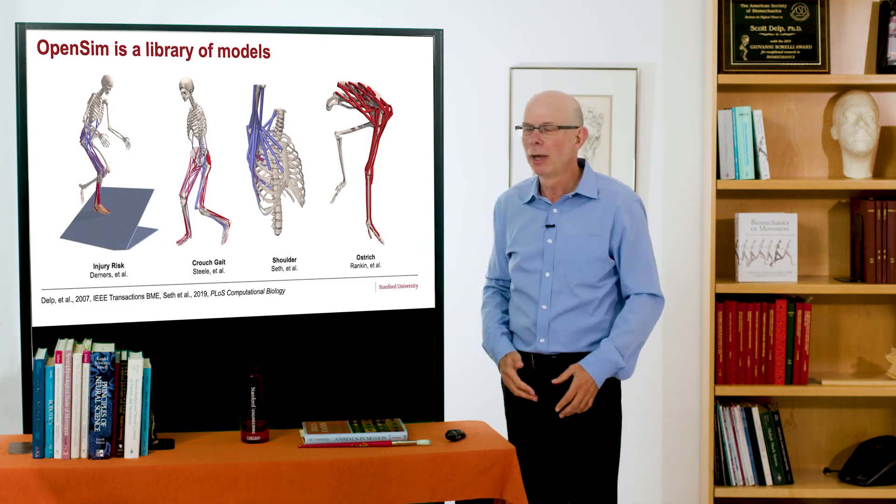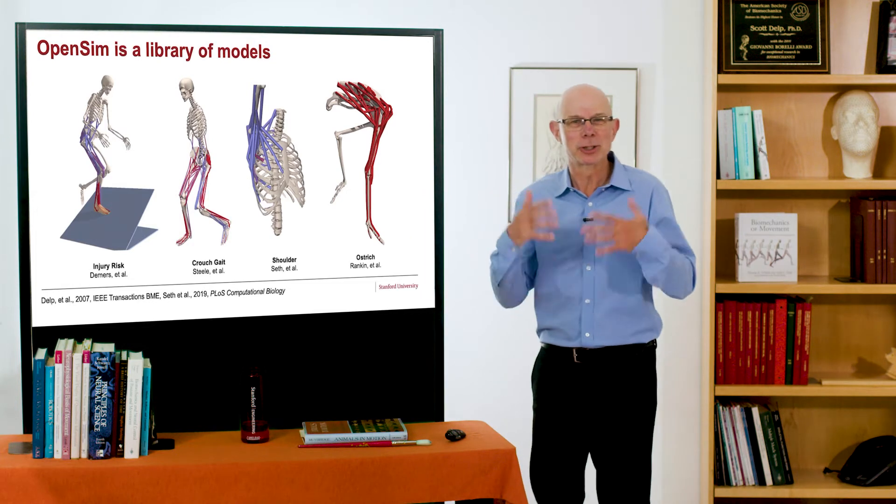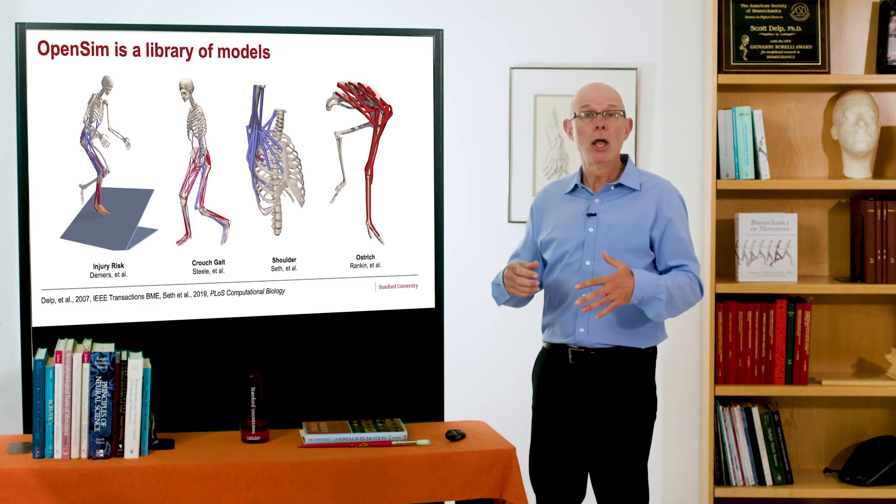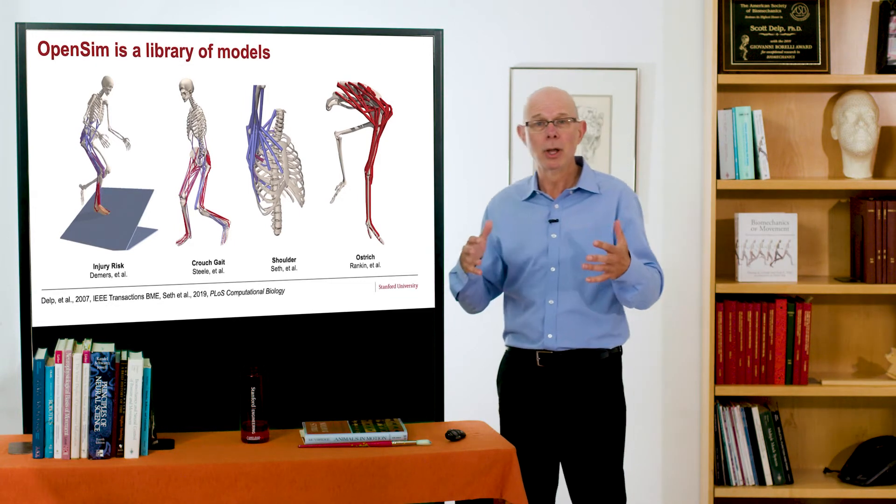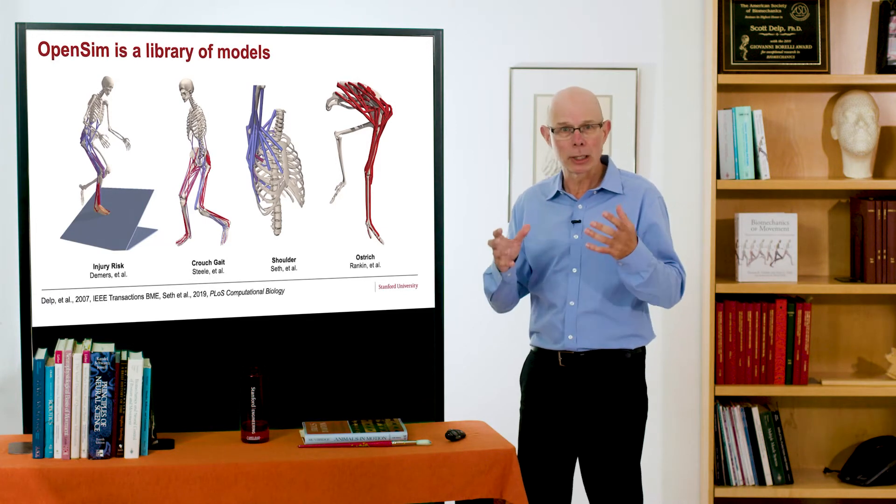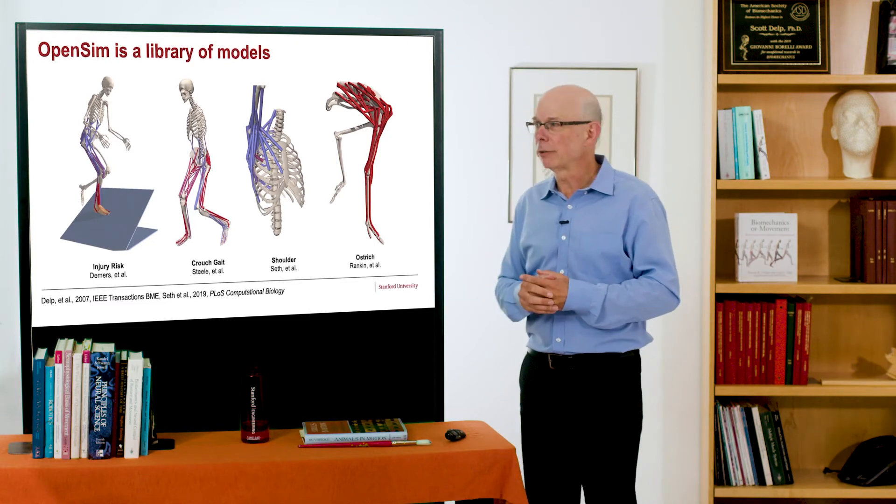So, Matt Demers developed this set of simulations of ankle injury risk. I remember I sat right outside my office. I'd go out there and I'd see him giggling. I'm like, well, Matt, what are you laughing about? He goes, oh, I just blew these ankle ligaments out. You know, of course, you need to use simulation to do this. You can't do it in experiments. And Matt made hundreds and hundreds and hundreds of simulations that are now available to anyone who wants to study ankle ligament injuries. There's also a really beautiful model that Matt made that is available as well.